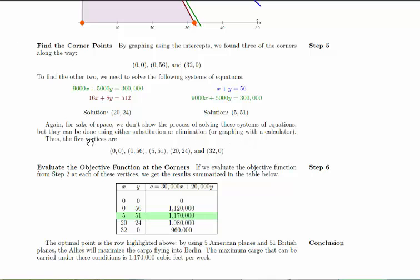Summarizing, we have these five corner points. And finally, we evaluate the objective function at the corners. So each combination of x and y is evaluated. And we find the one that has the maximum, the highest cargo capacity. So that's if 5 American planes are used and 51 British planes are used. Notice we're using a total of 56 flights, which was our constraint. And we're meeting all the other constraints as well. And our maximum cargo capacity is 1.17 million cubic feet per week. And that's our conclusion.